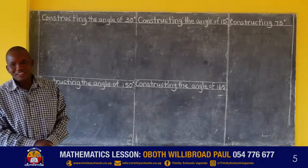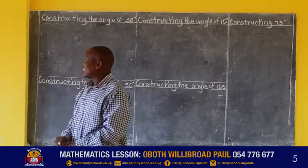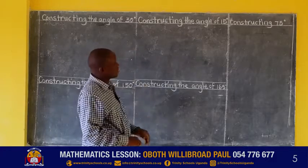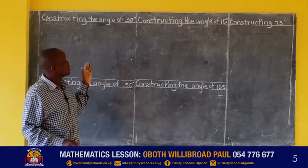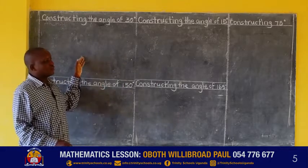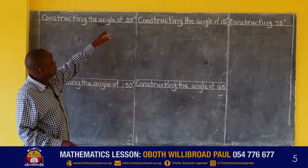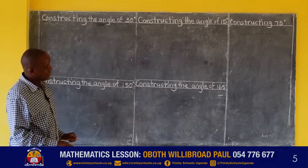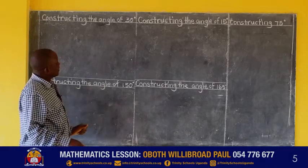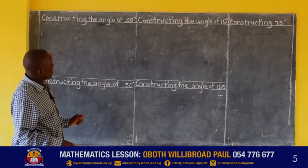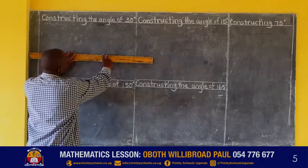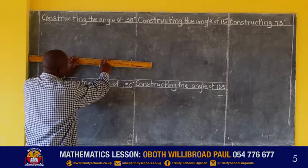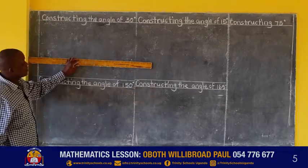Hello, my good children. Welcome back. In our previous lesson, we learned how to construct some angles and we are continuing from there. We learned how to construct the angle of 60 degrees. We want to construct 30 degrees, but let us start with the angle of 60 because it's the one that gives us the 30 degrees.